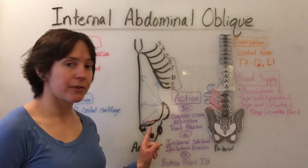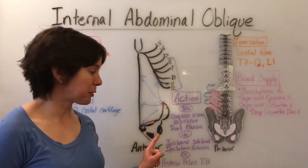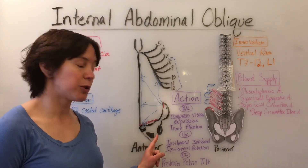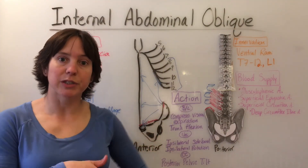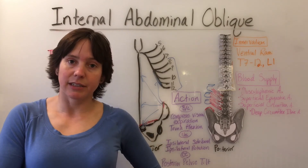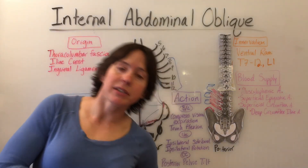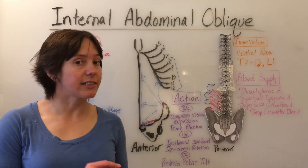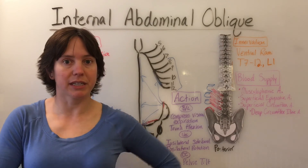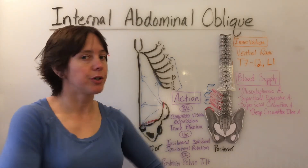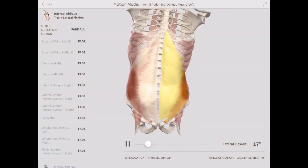Unilaterally, the internal abdominal oblique will do ipsilateral side bending — which is same side side bending — and ipsilateral trunk rotation, which is same side trunk rotation.